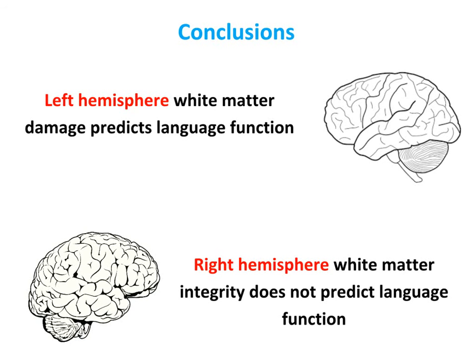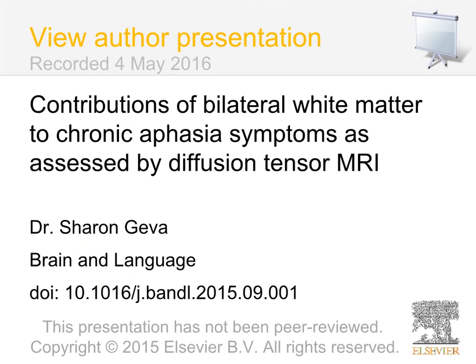In summary, using various methods, we found that left hemisphere white matter damage, both inside and outside the lesioned area, predicts language function among patients with chronic post-stroke aphasia. However, we found no evidence that integrity of the right hemisphere white matter in general, or of the arcuate fasciculus in particular, predicts language function following stroke.